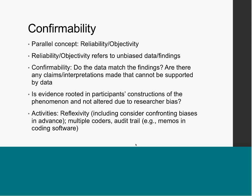The next concept is confirmability — the parallel concept is reliability and objectivity. It refers to unbiased data and findings. Do the findings match the data? Are there any claims or interpretations that cannot be supported — are you overstretching the data? Is the evidence rooted in participants' constructions of the phenomenon? Member checks can also support confirmability. Another key activity is reflexivity: confronting and acknowledging your biases in advance.